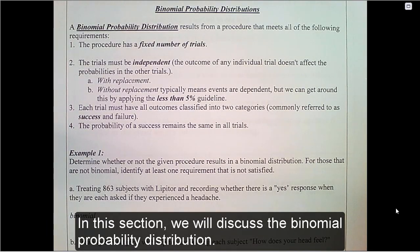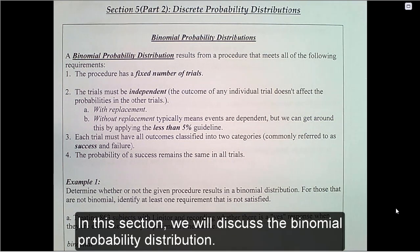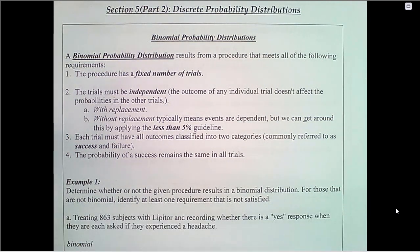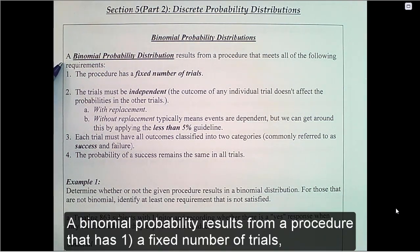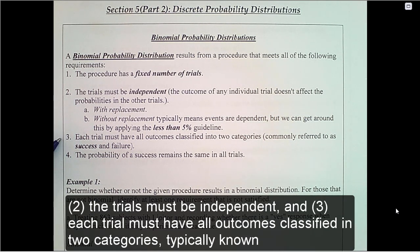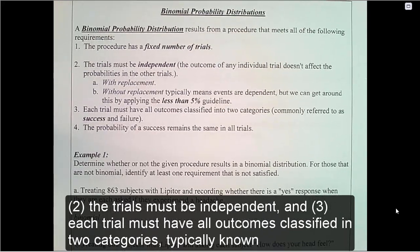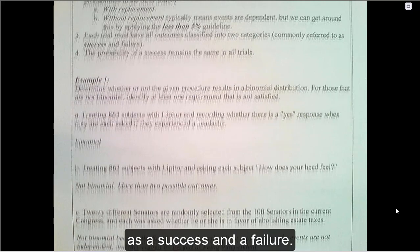In this section, we will discuss the binomial probability distribution. A binomial probability results from a procedure that has a fixed number of trials. Two, the trials must be independent. And three, each trial must have all the outcomes classified in two categories, typically known as a success and a failure.